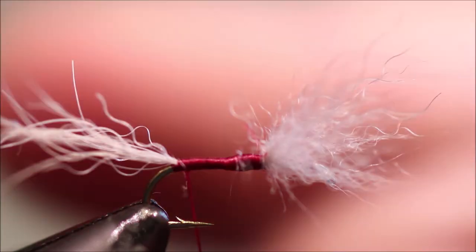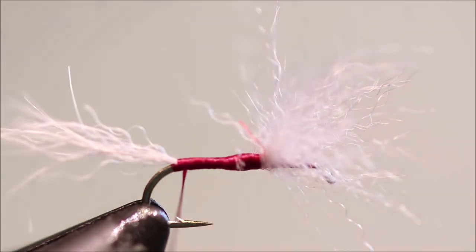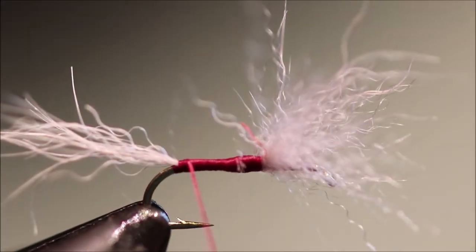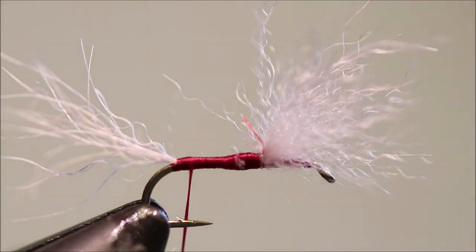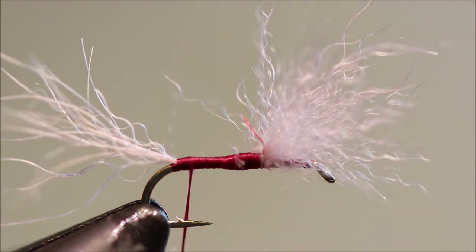And tidy everything up, so I've got a nice smooth foundation of that burgundy thread. I want that colour to show through. Now also, because it's an Iron Blue, I like to leave a wee band of the burgundy thread just showing, just to give that wee hint of colour.